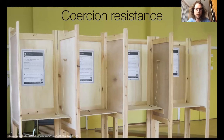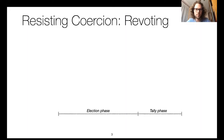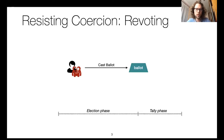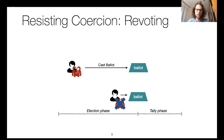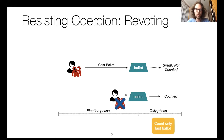VoteAgain builds on top of the re-voting paradigm, where voters can vote multiple times and only the last vote counts. Suppose a voter is forced to cast a vote under the influence of a coercer. The voter can do exactly what the coercer wants — she casts the ballot as she would normally do. However, at a later point when the coercer is absent, she can cast another ballot. Because in the re-voting system only the last ballot is counted, coercion happens to be ineffective, thereby providing coercion resistance.